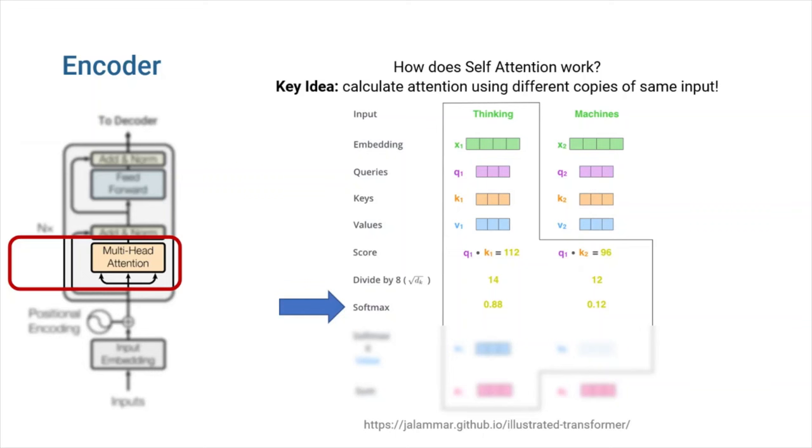The results then have to go through softmax operation. Softmax normalizes the scores, so they're all positive and add up to 1. This softmax score determines how much each word will be expressed at this position. Clearly, the word at this position will have the highest softmax score. But sometimes, it's useful to attend to another word that is relevant to the current word.